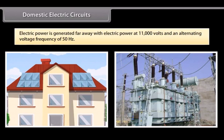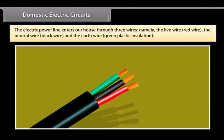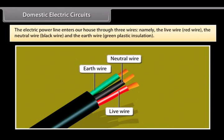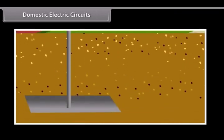Electric power is generated far away from the places it is consumed. At the generating station, the electric power is generated at 11,000 volts with an alternating voltage frequency of 50 hertz. The power is transmitted to the places of consumption at high voltage to reduce the loss of energy during transmission. The electric power line enters our house through three wires: the live wire (red wire), the neutral wire (black wire), and the earth wire (green plastic insulation). The live wire has a high potential of 220 volts and the neutral wire has zero potential. Thus, the potential difference between the live wire and the neutral wire is 220 volts. The earth wire is connected to a metal plate deep into the earth to avoid receiving any severe shock in case of any leakage of current while using the appliances.